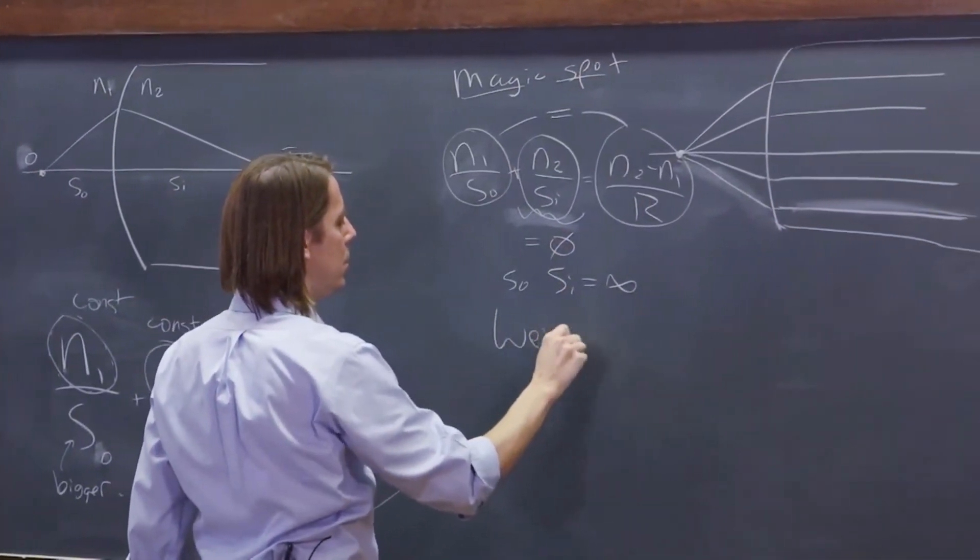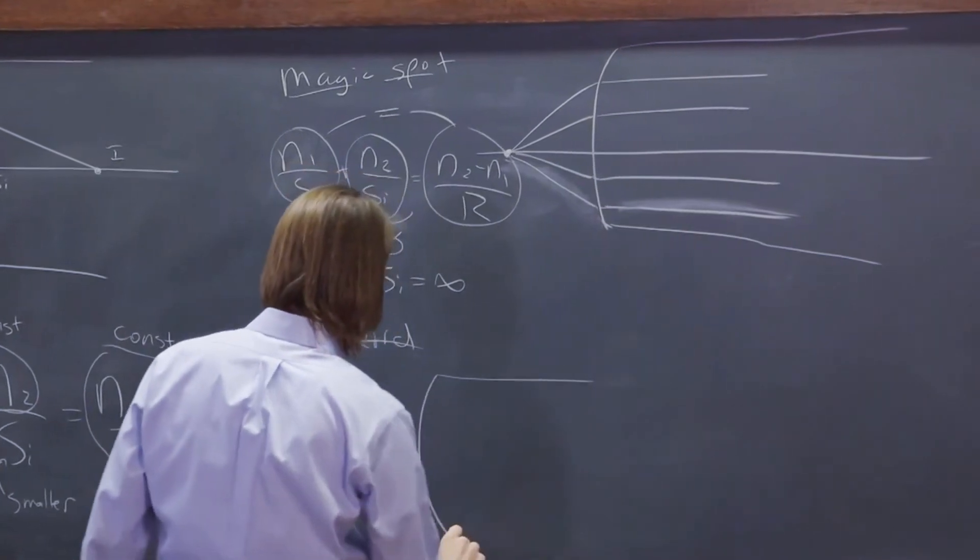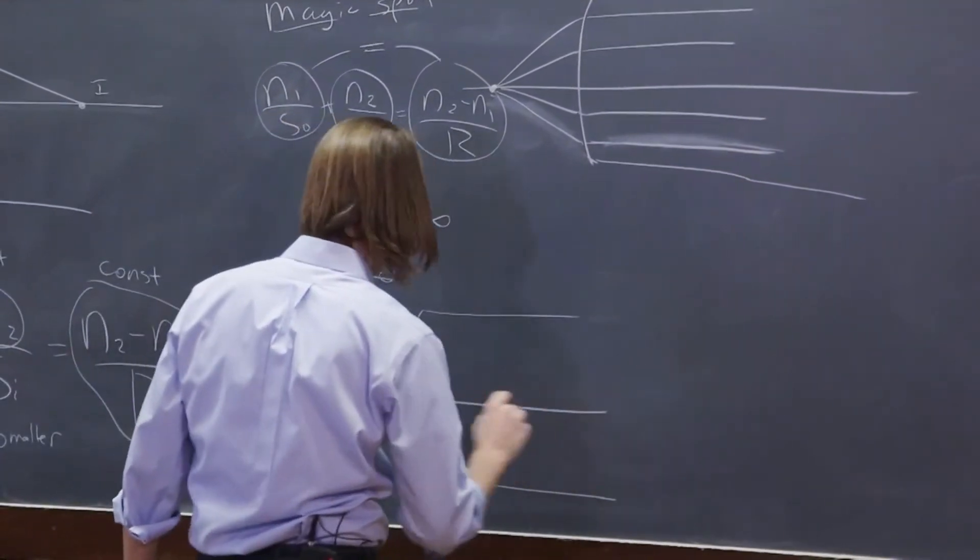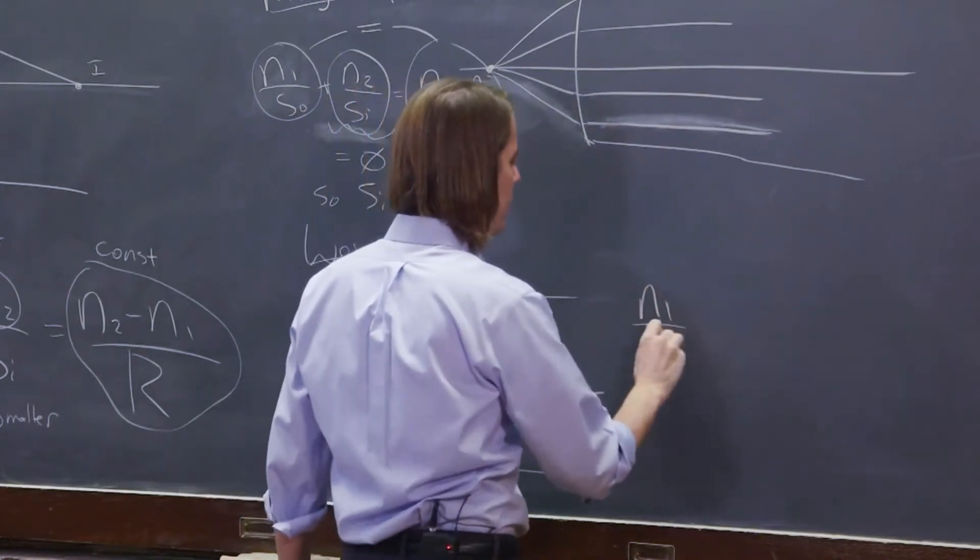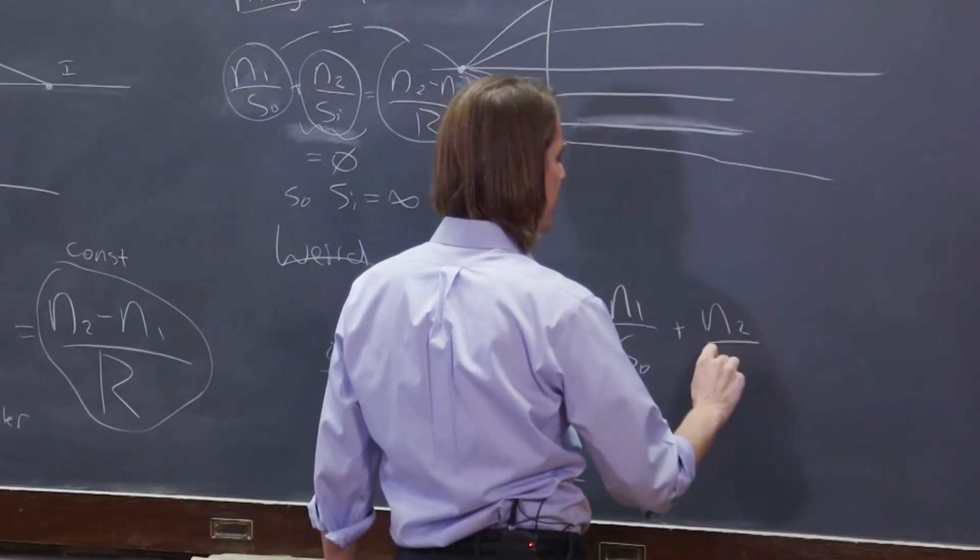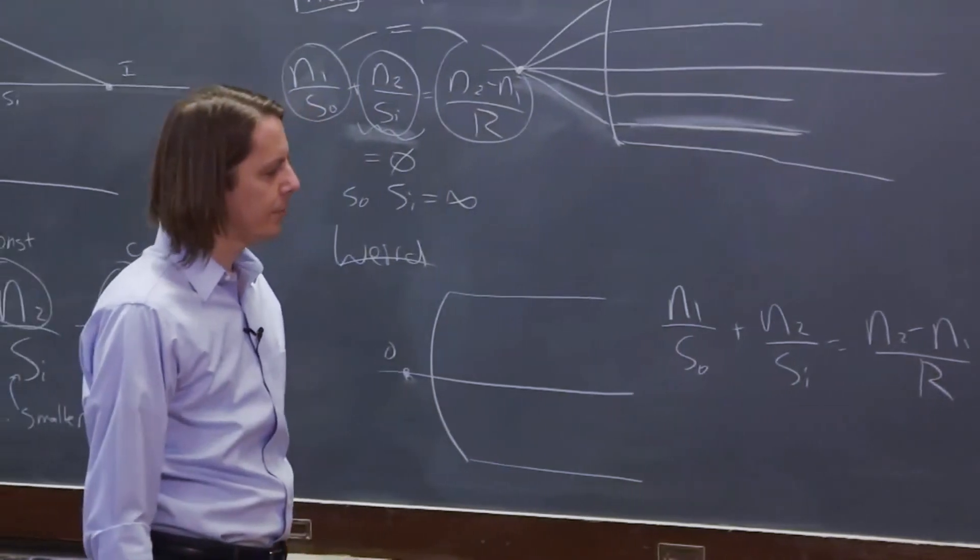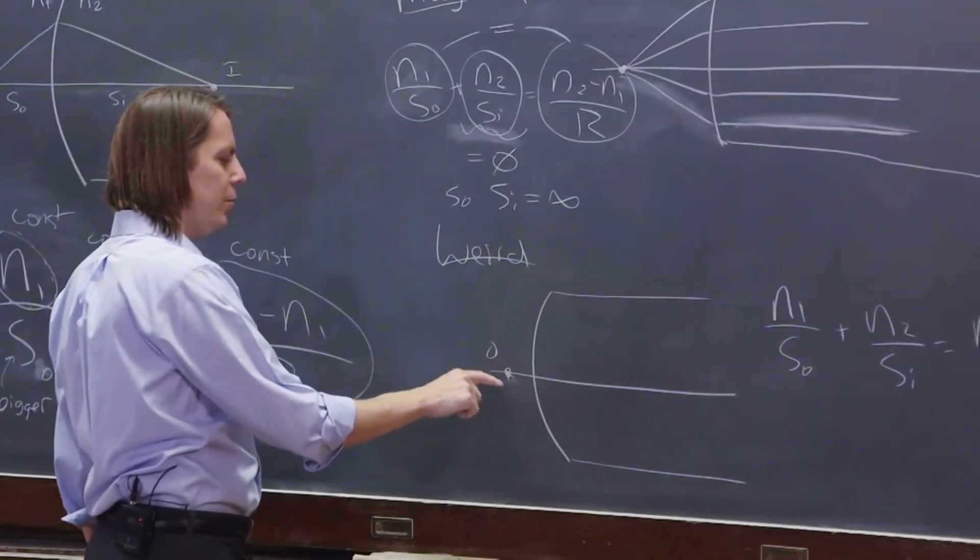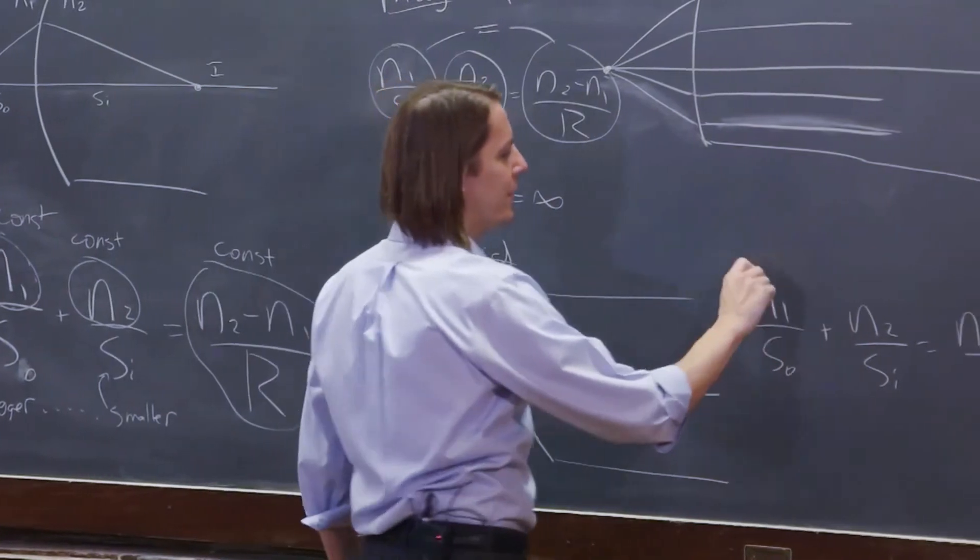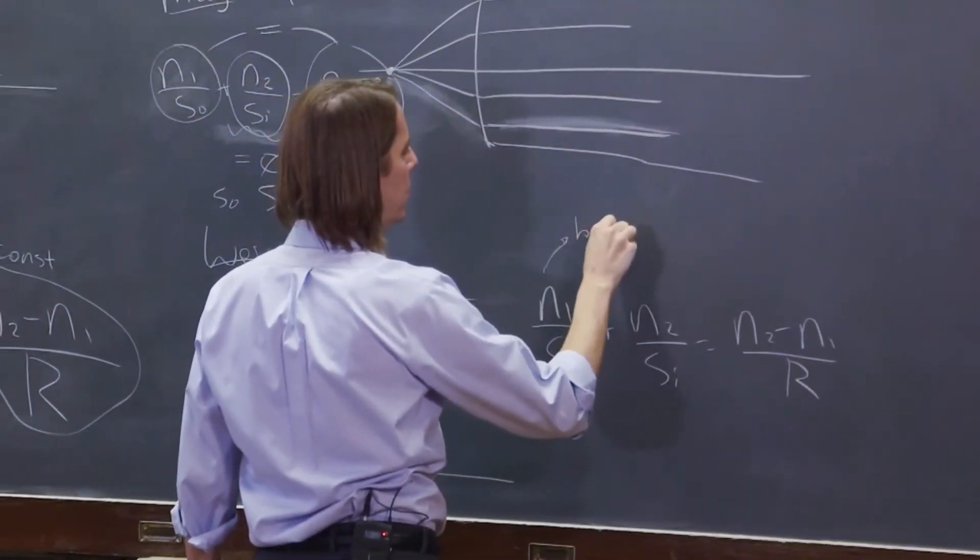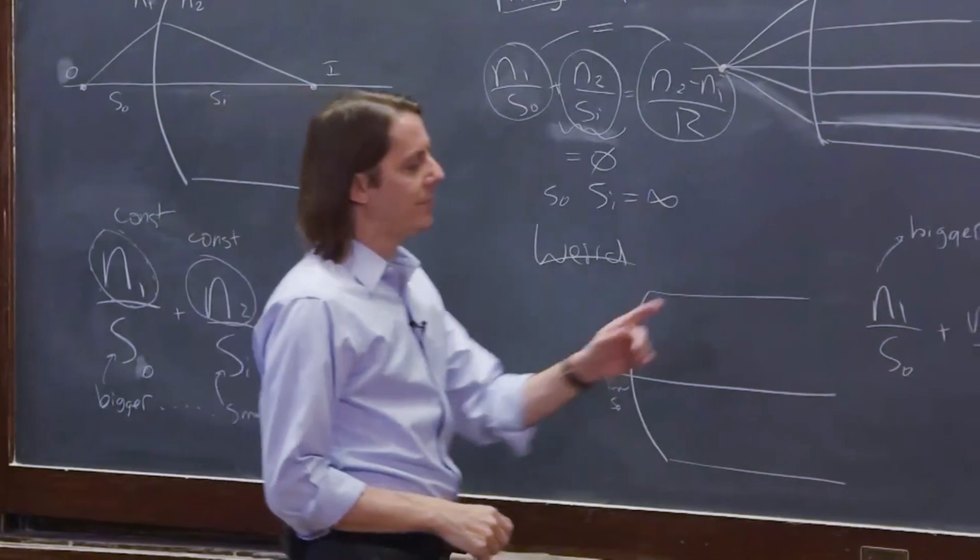We could do something. That was the magic spot. We could also do something weird. What if we put the object distance really close? Like this. Let's see. So here's our optical axis, and if we put the object right there, what's going to happen? N1 of the object plus N2 over the image equals N2 minus N1 over R equals some constant. Well, if we put this really close, we make a small object distance, which makes this really big. So this is going to be bigger than that.